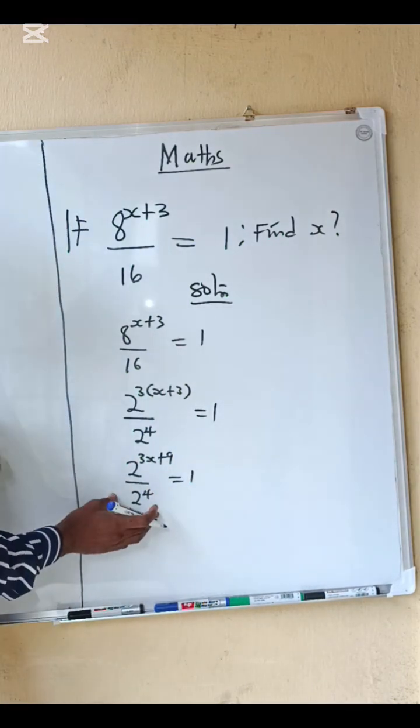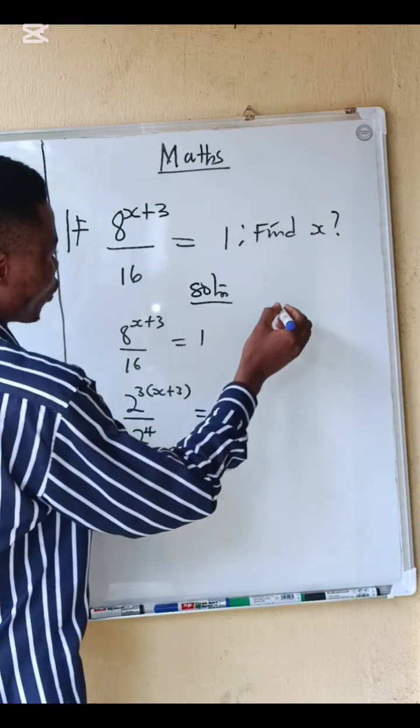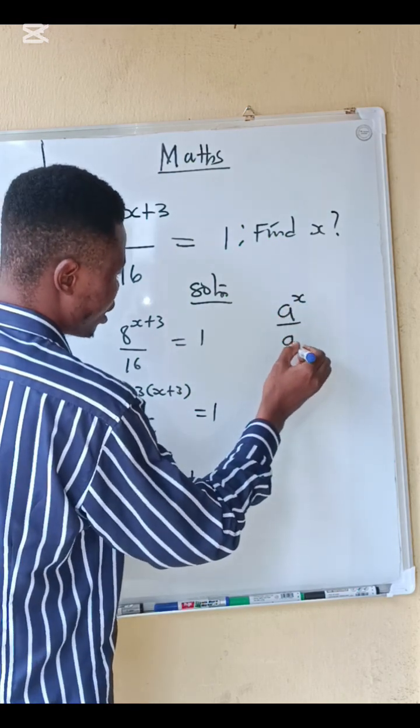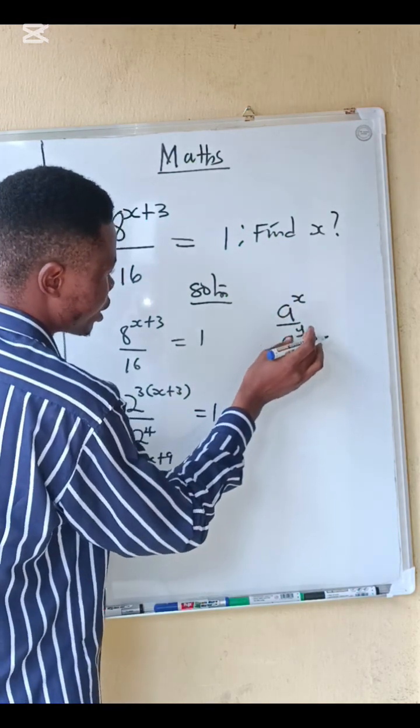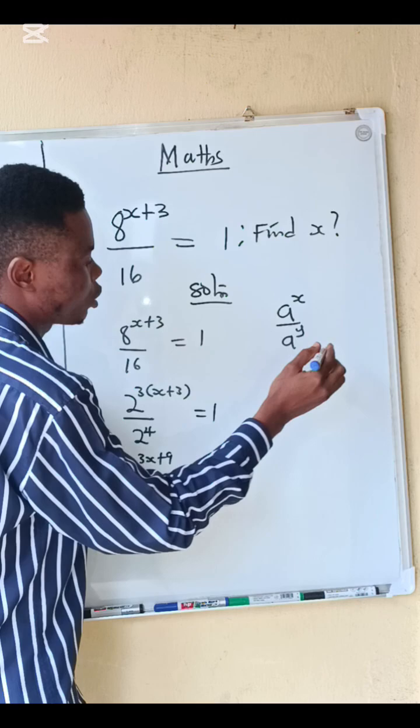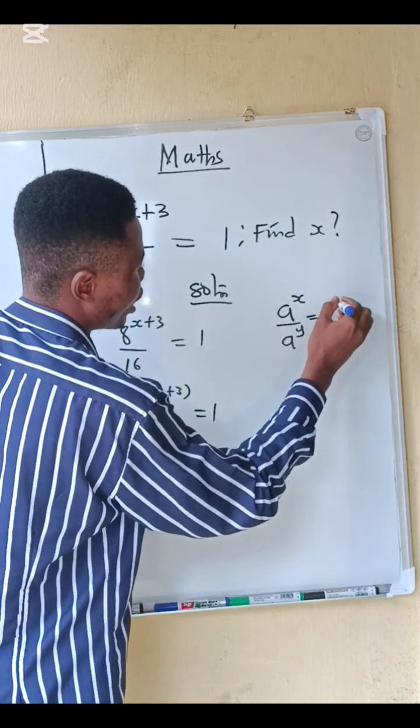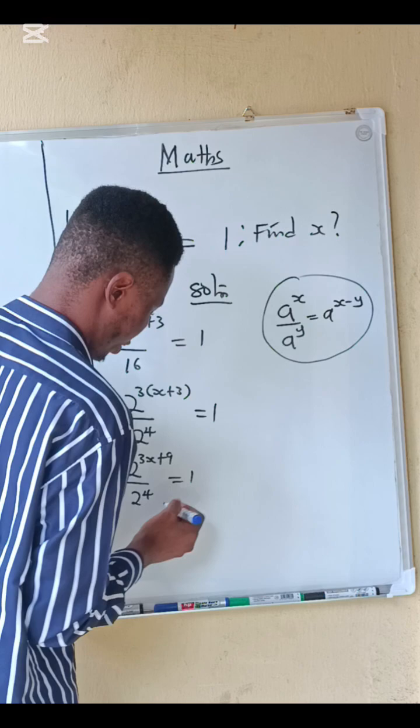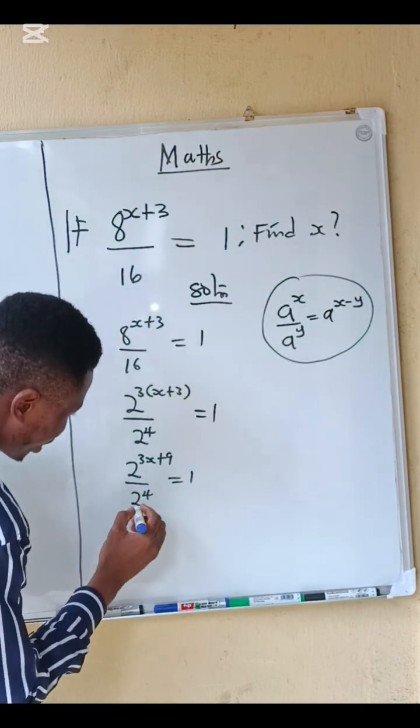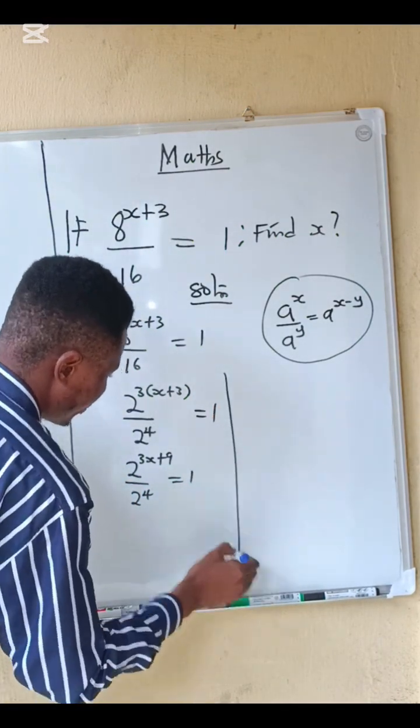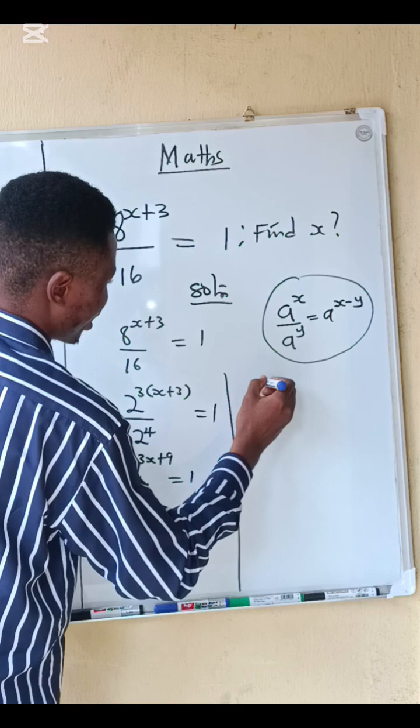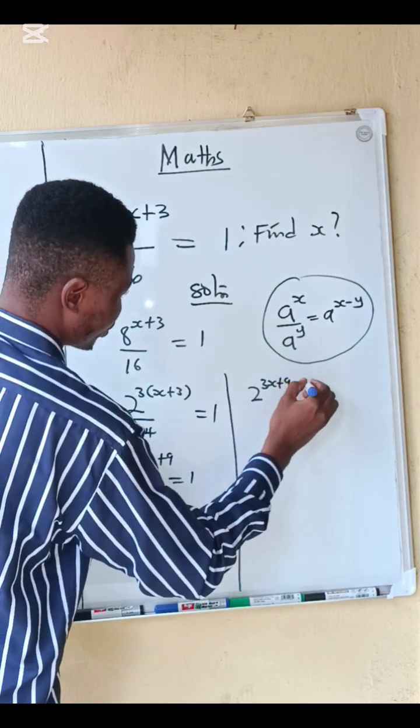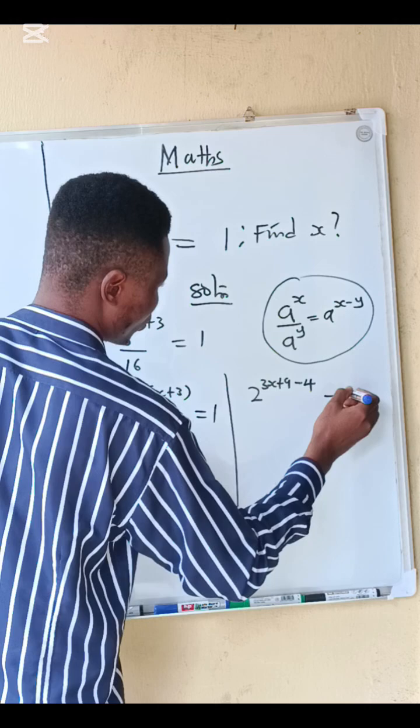Now we are going to apply the division rule. If you have a power x divided by a power y with the same base, you subtract the powers. You get a power x minus y. I'm going to apply this same technique here, so you are going to have 2 power 3x plus 9 minus 4 equals to 1.